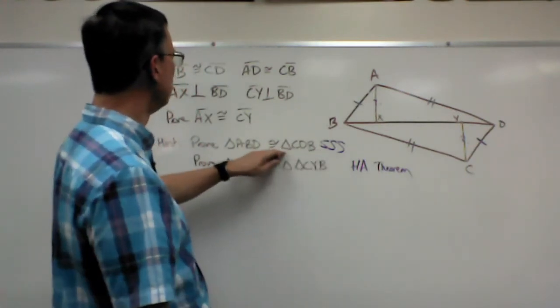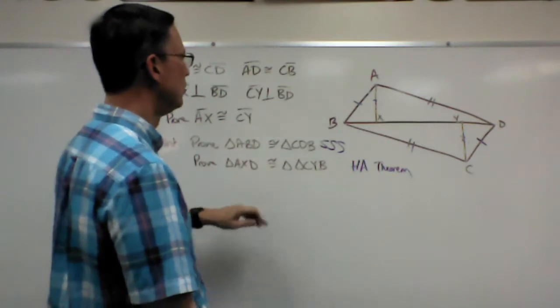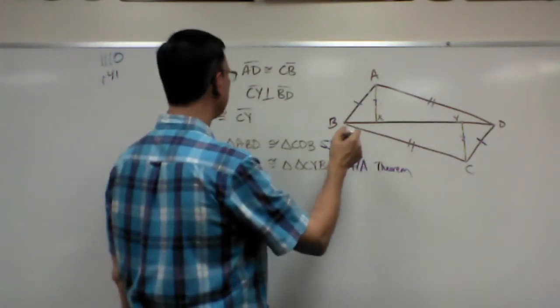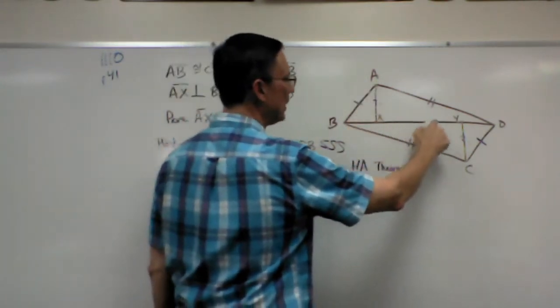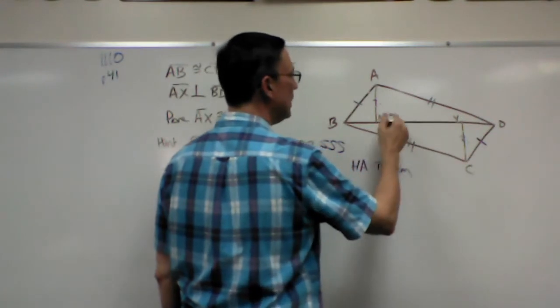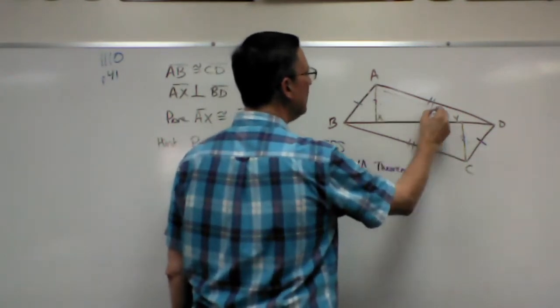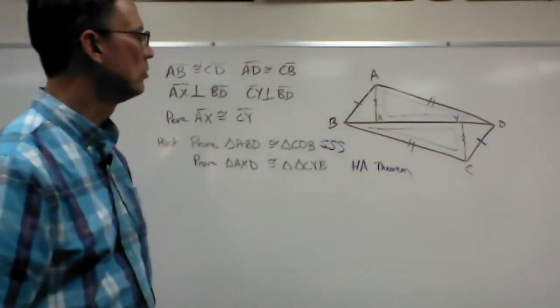Okay, so once we know that these are congruent, we're trying to prove that this triangle here, AXD, is congruent to this triangle right here. So let me just kind of outline this a little bit. And this one, we're trying to prove that those two are congruent.